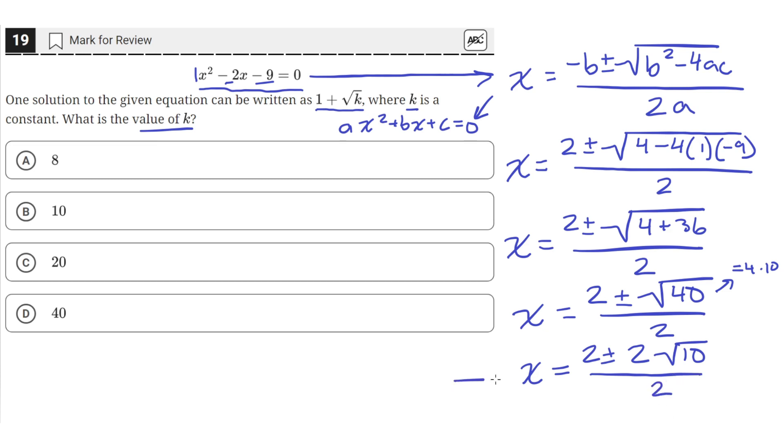And then one final step is just we can divide these coefficients. So x will equal 1 plus or minus the square root of 10. So we just divided 2 by 2 to get 1. And this 2 by 2 to get 1 as well. So now we have our solution written in the form of 1 plus the square root of k. So we'll just use the positive solution. So x equals 1 plus the square root of 10.